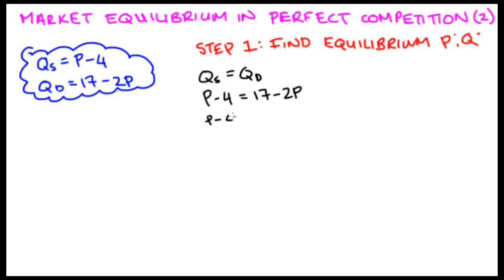The first thing I'm going to do is move the P over to the left hand side, that 2P, so I'm going to plus 2P to both sides. On the right hand side, this means I get 17 minus 2P plus 2P. The minus 2P and the plus 2P cancel out, and I'm just left with 17 on that right hand side. On the left hand side, I have P minus 4 plus 2P. This can be reduced to 3P, since P plus 2P is 3P, minus 4.